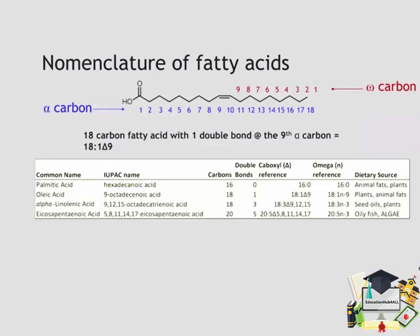The table below shows some additional examples of common fatty acids. Foremost we can see palmitic acid at the top, also known by its scientific name hexadecanoic acid. This is a 16-carbon, zero-double-bond saturated fatty acid that's very common in animal fats as well as some plants — think of it as butter.